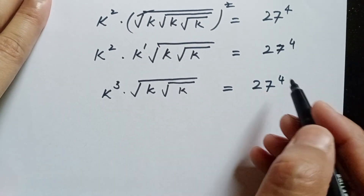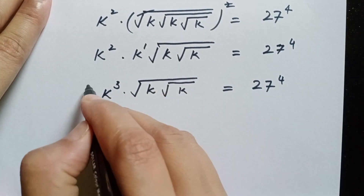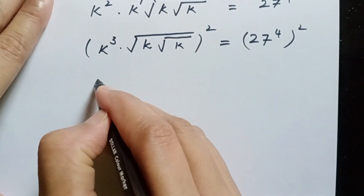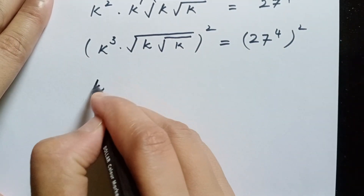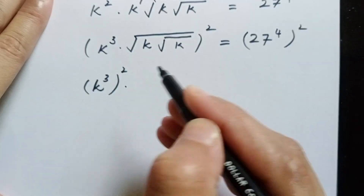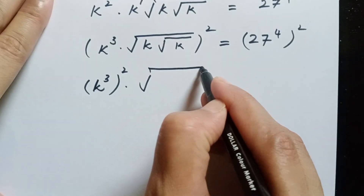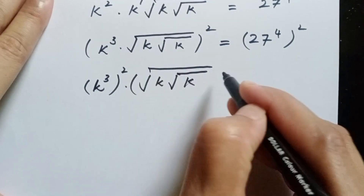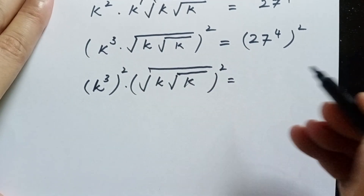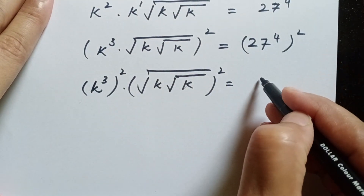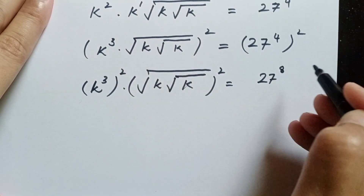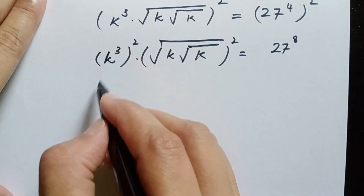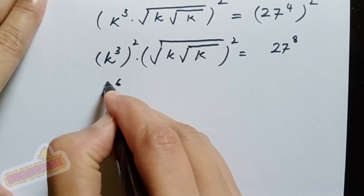So we will again take the square on both sides. Here we have square root of k times square root of k, and squaring the right side: 4 times 2 is 8, giving 27 to the power of 8.